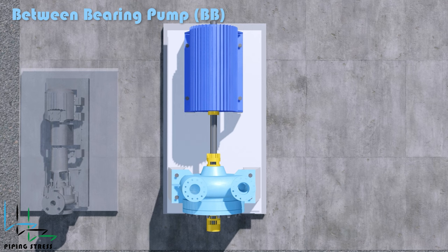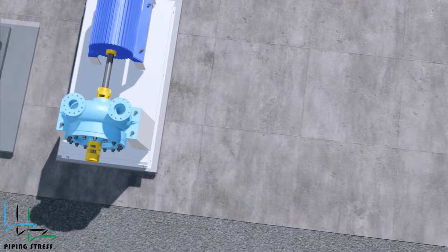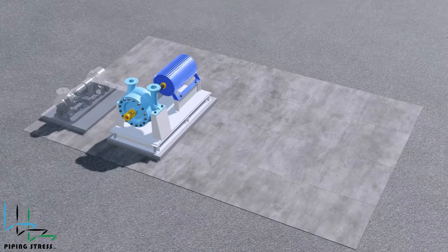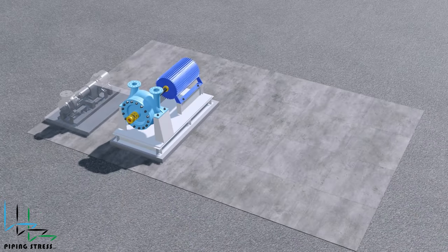Between Bearing Pump: This pump type features two bearings, one at each end of the pump shaft, supporting the impeller in the middle. This type of pump is used because of high flow rate requirements.